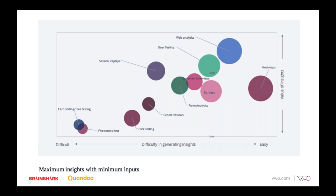Web analytics, when set up properly, can tell you about every aspect of the website and insights are incredibly high. Web analytics and session replays can be a little difficult when it comes to digging insights, but they tell you things no other tool can, and the value of these insights is amazing. Card sorting and five-second tests should be the last resort for generating insights. The first quadrant tools are what you should aim for.